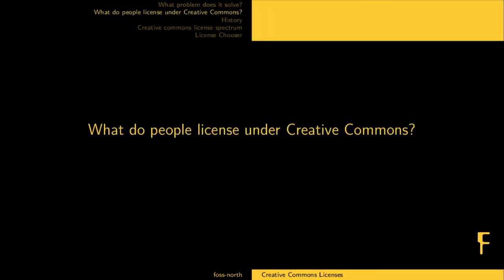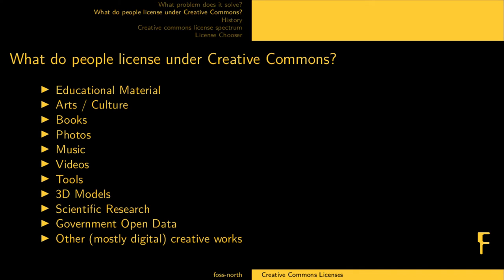Contrary to the other licenses in this series, Creative Commons is not really for code, but for educational material. People license arts, books, photos, music, videos, and different tools under it. So if you create a tool, you can license it under this. 3D models, scientific research, a lot of government open data, and other mostly digital creative works are licensed under Creative Commons.